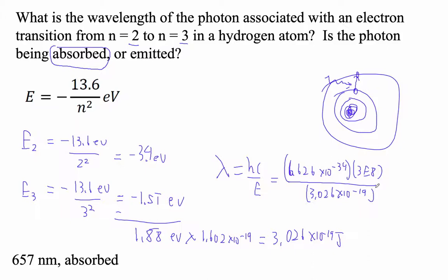And I'm getting 6.569 times 10 to the minus 7th, which would be, I'll say 657 times 10 to the minus 9th meters, which is 657 nanometers.